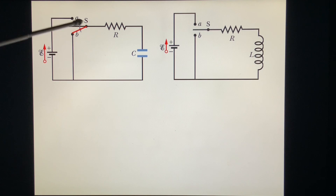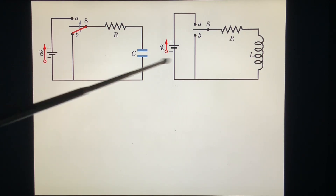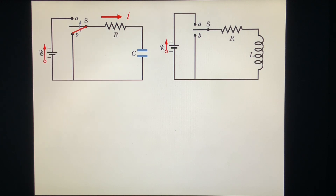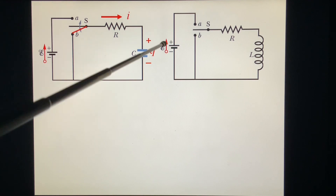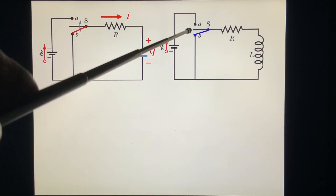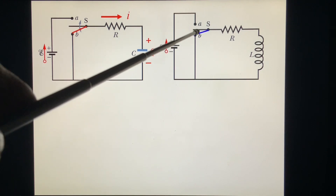Now we see another scenario: after the capacitor has finished charging, we switch S to the other position. We still assume a current I — we can assume either direction. Even though the real direction may be opposite, we just assume it and do the calculation. If we assume this direction, this plate is positive charge and this plate is negative charge.